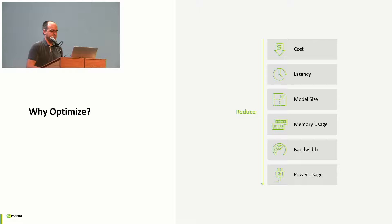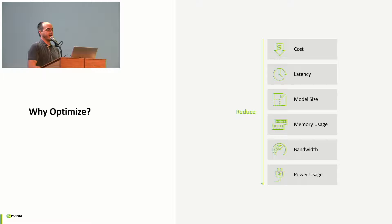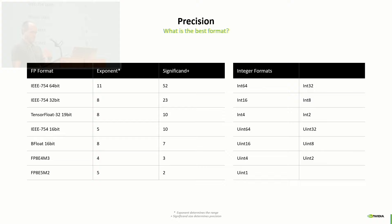You need to reduce the model size or memory usage — usually these go hand in hand, but not always. You also care about bandwidth: if you're paying the cost of executing a neural network on multiple devices, you want to reduce the cost of transferring data across the network. And obviously, power usage given the cost of energy nowadays. The first optimization topic is precision.